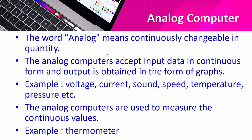Analog means the data continuously changes — it keeps slowly increasing or decreasing. For example, if data goes from 0 to 1, it passes through 0.01, 0.02, 0.03, 0.04, and so on, continuously changing. So an analog computer takes such continuous data as input and gives output as graphs or signals. Examples of analog data include voltage, current, sound, speed, temperature, pressure, etc. Analog computers are used to measure these continuously changing values.